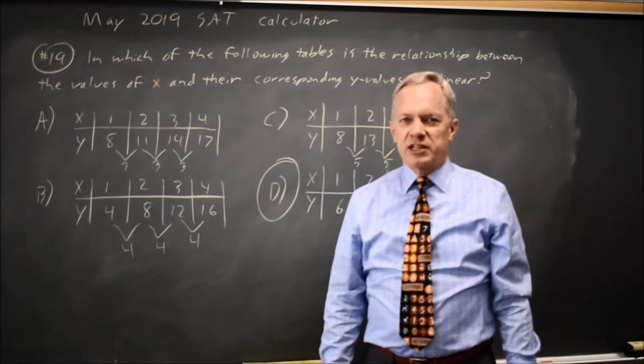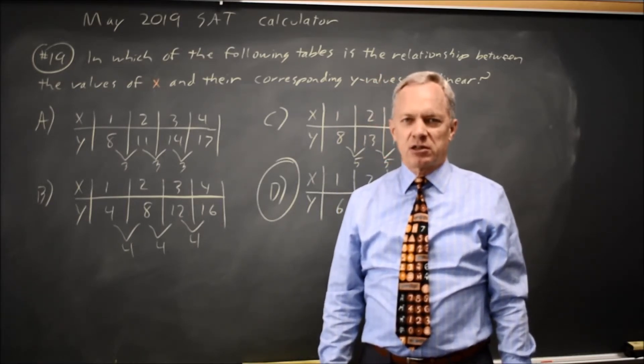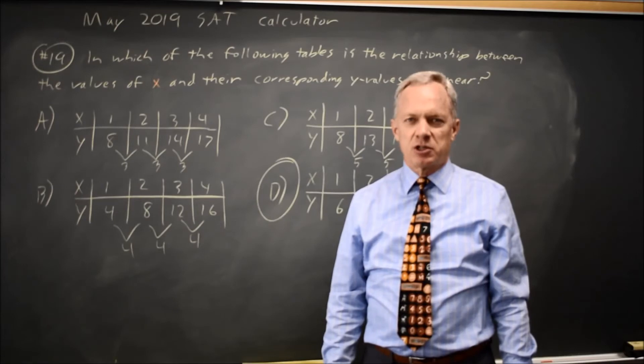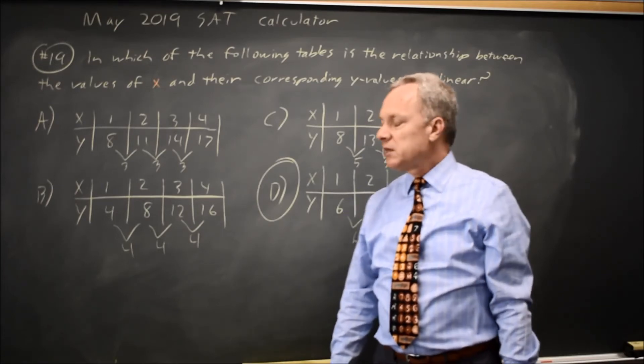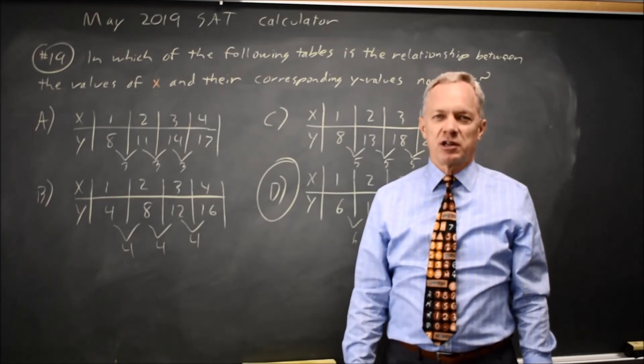The College Board often asks you to compare linear and exponential models and identify the correct one according to the words of their problem. In this case, choice D is the exponential and the other three are linear.